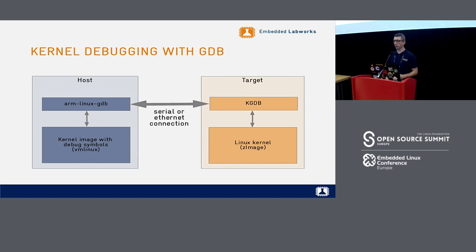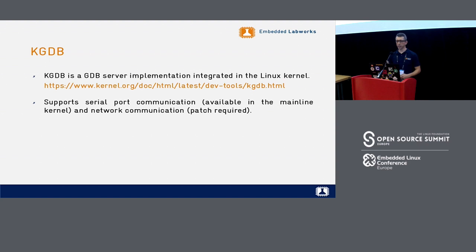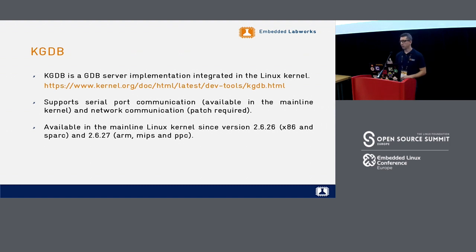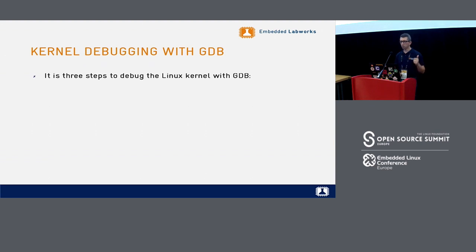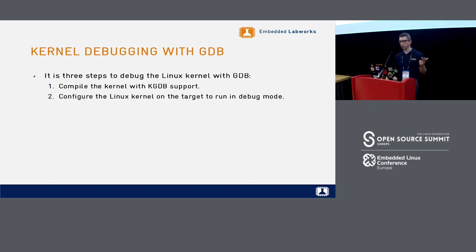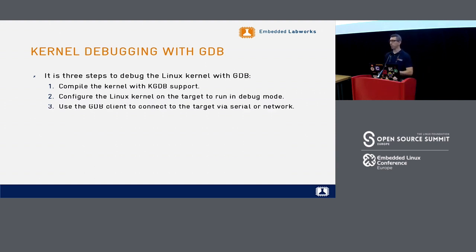To make KGDB work: enable KGDB in the kernel — it's been available for a long time. You can use it to communicate with the kernel using the serial port or network, but network support is not mainline and requires patches. The mainline kernel only supports debugging via serial port. First, compile the kernel with KGDB support. Second, put the kernel in debug mode. Then use your toolchain's GDB to connect to the kernel and start the debugging process.